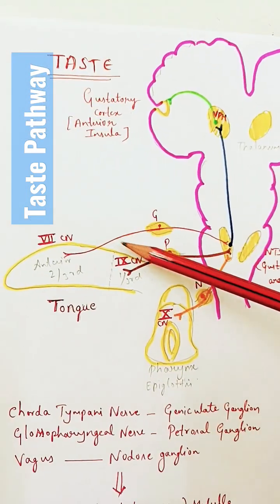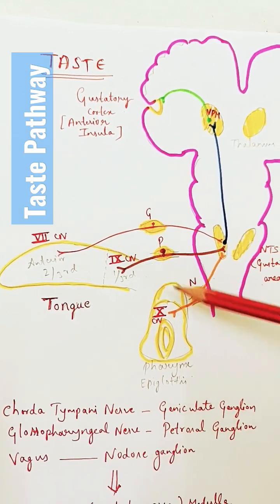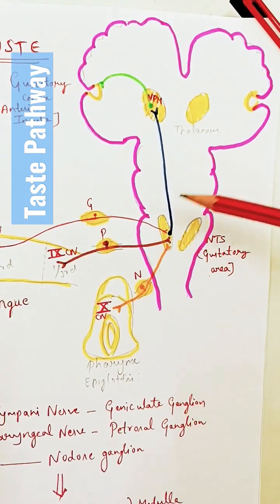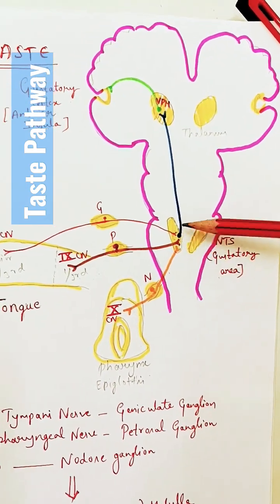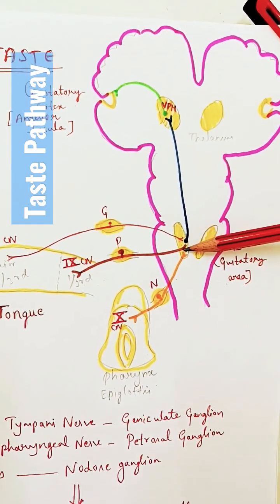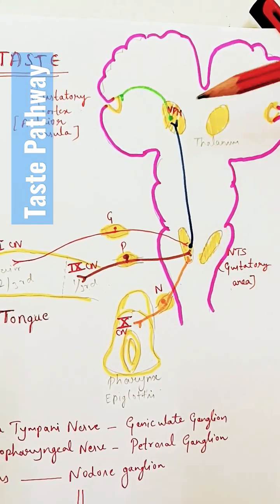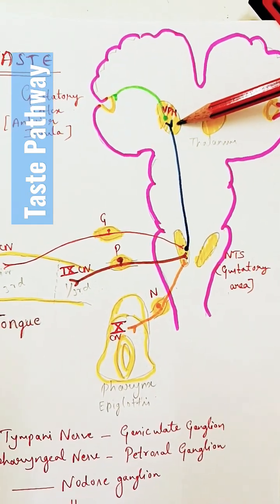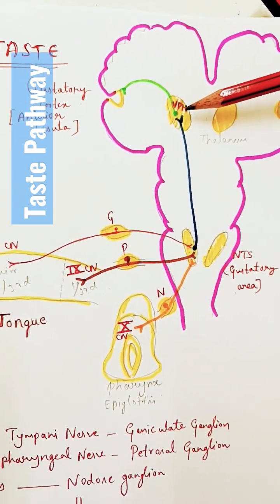So, we have the seventh cranial nerve, ninth cranial nerve, and tenth cranial nerve bringing information to the nucleus tractus solitarius. The second-order neuron arises from the nucleus tractus solitarius and projects to the VPM nucleus of the thalamus.